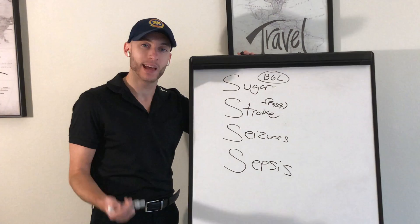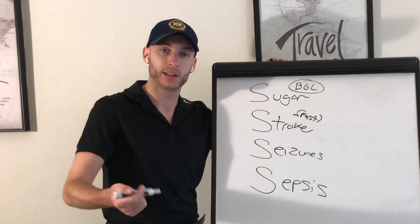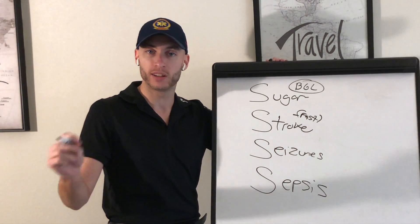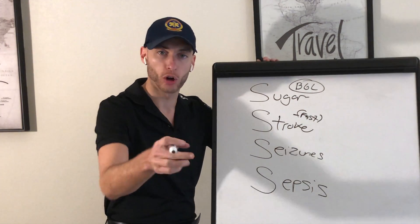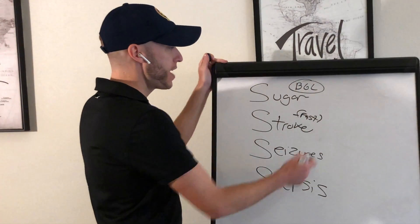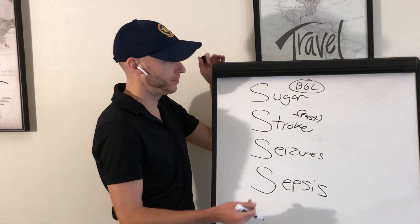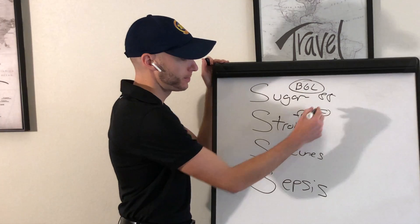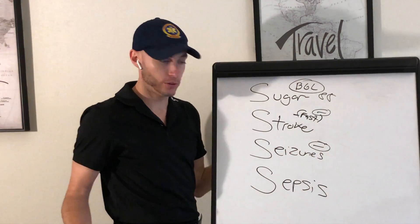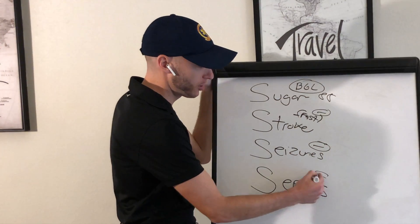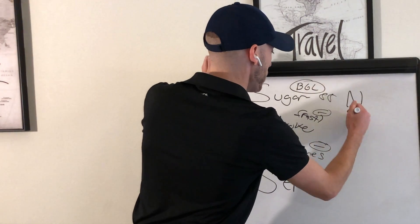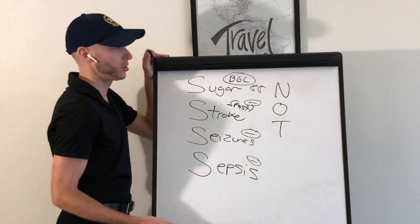Sepsis means bacteria in the blood that shouldn't be there. Sepsis happens most commonly from pneumonia and UTI — though there can be other causes. Check for signs of pneumonia and UTI as a good start. Now if the blood sugar comes back normal at 88, negative stroke scale, no seizure history, not combative, not postictal, and no signs of infection — then we move on to NOT.